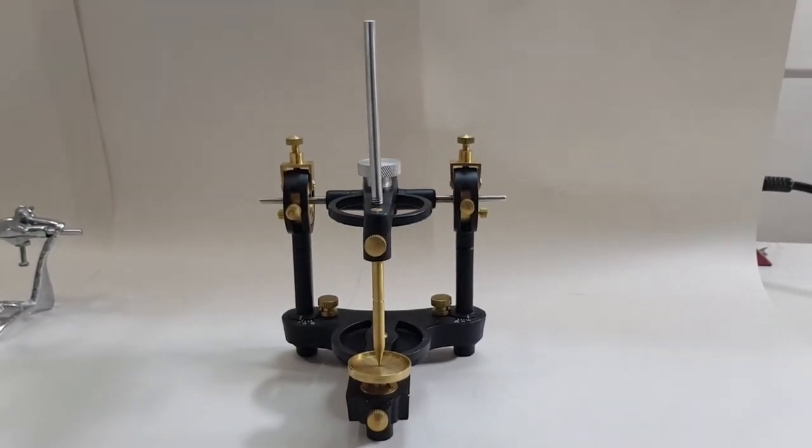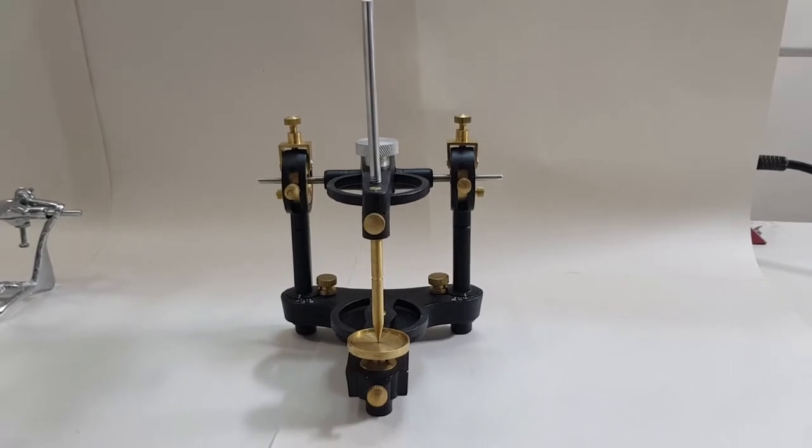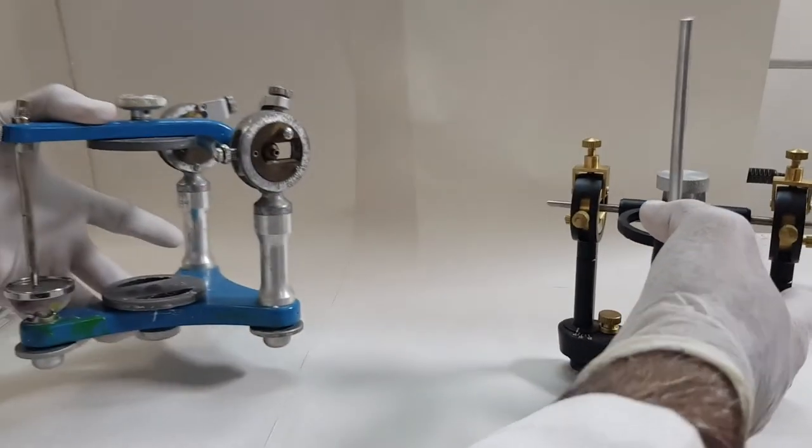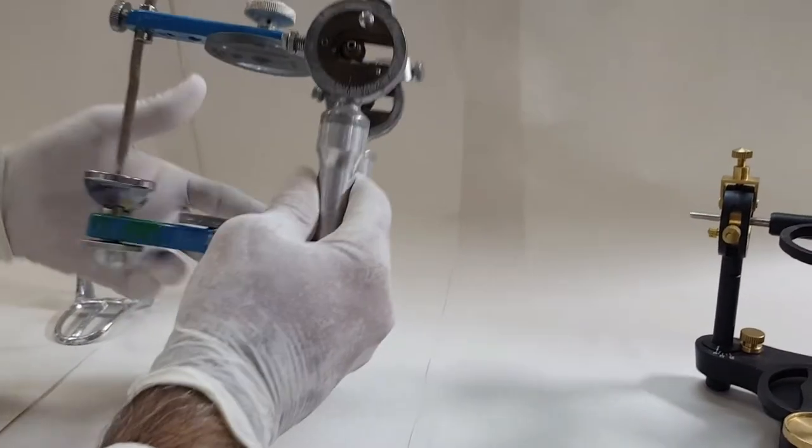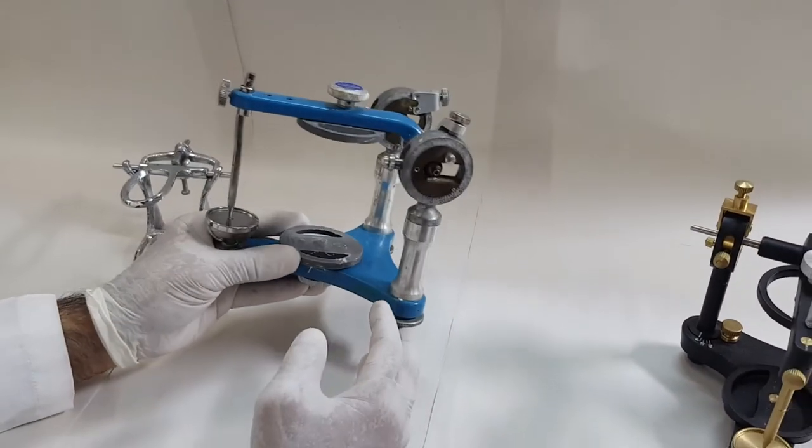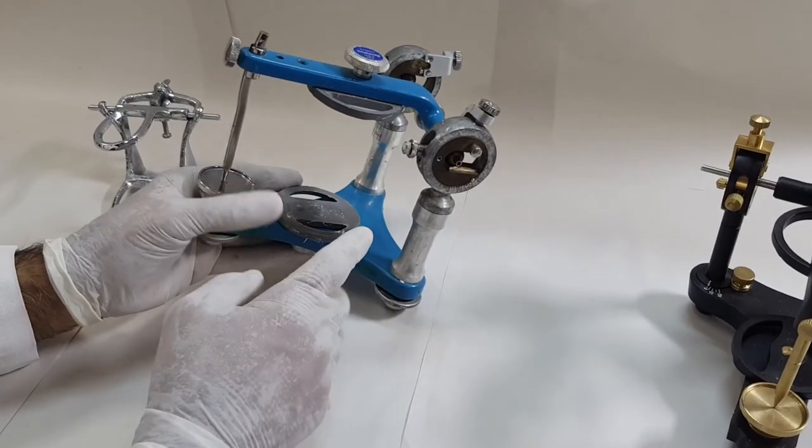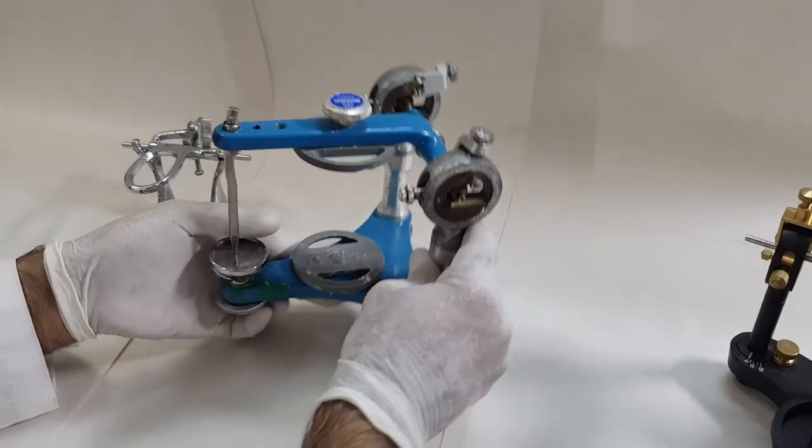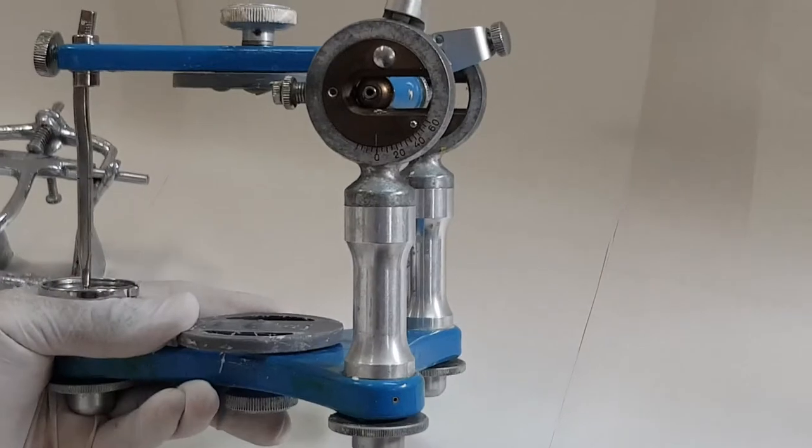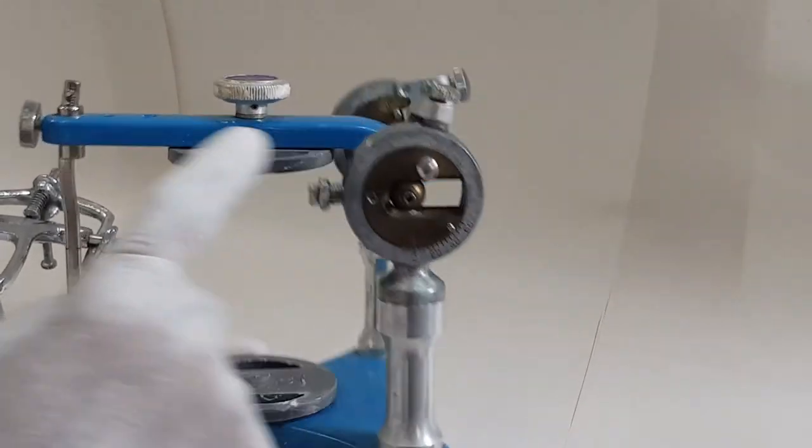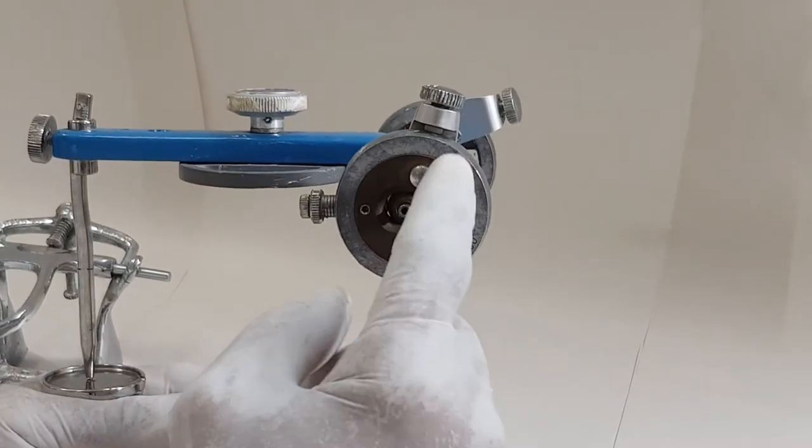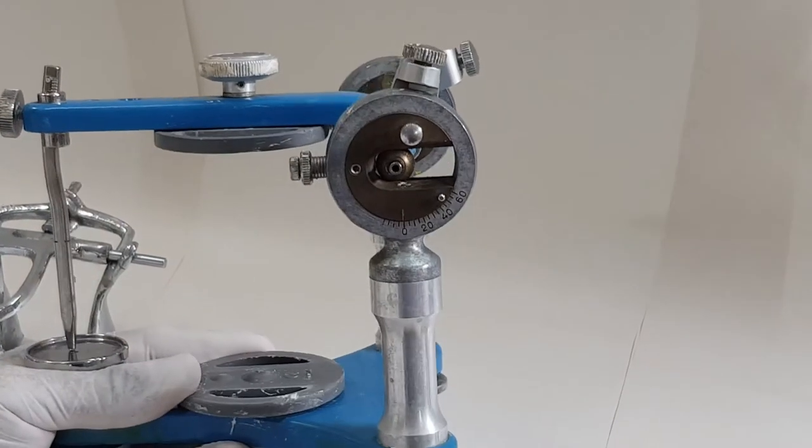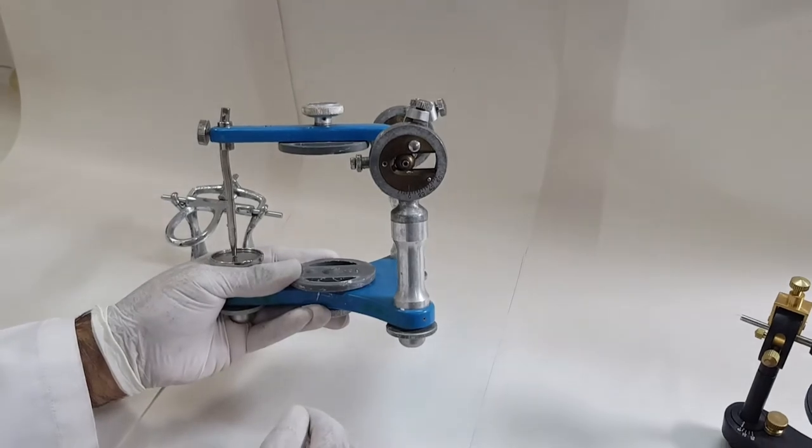A similar example of a non-archon articulator is the true version, which is the dentatus articulator. This is also called the Hanau's articulator. This is the dentatus articulator. This is the original dentatus articulator, but this is also a non-archon articulator. It has the same upper member having attached the condylar ball. The condylar element is attached to the mandibular or the lower part.